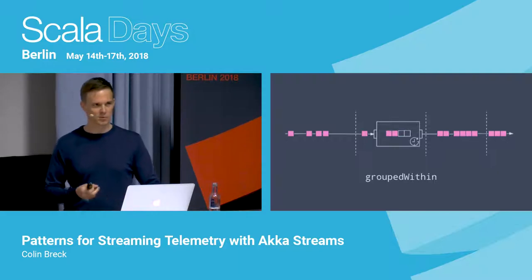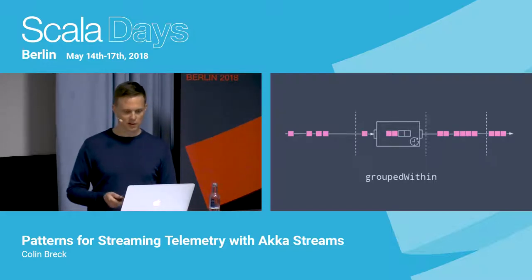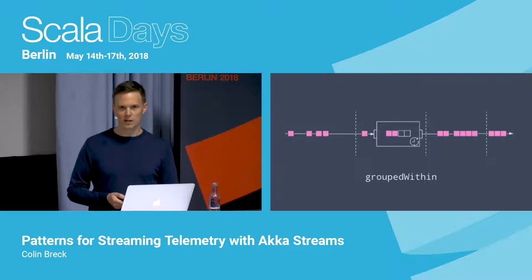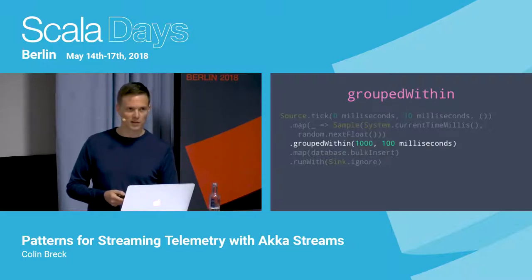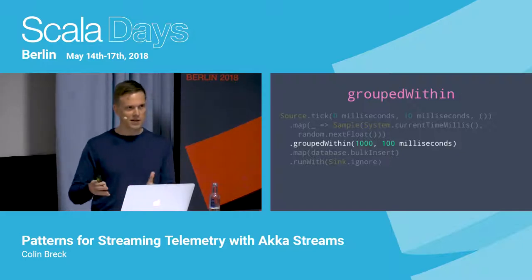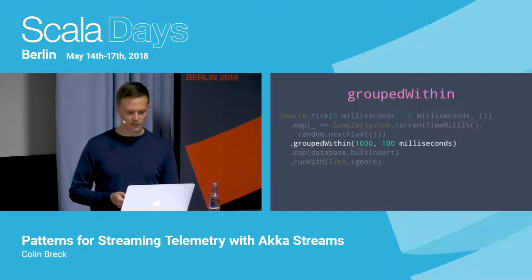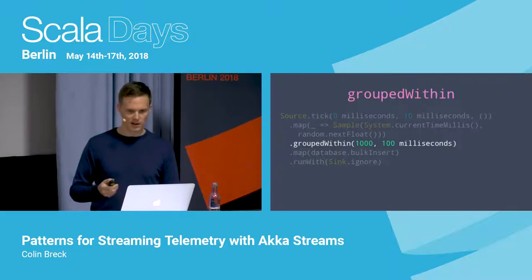A problem we've already seen is that grouping can introduce too much latency in telemetry systems when we need to make near real-time operational decisions. The solution in Akka Streams is the groupedWithin element — just replace grouped with groupedWithin. This emits elements downstream in either batches of 1,000 or whatever's been buffered within 100 milliseconds, whichever comes first. Batch sizes downstream won't be uniform anymore, but you get a maximum bound on latency.